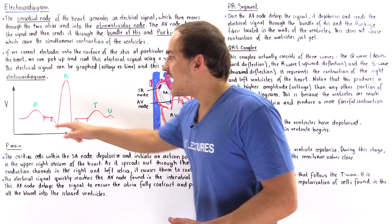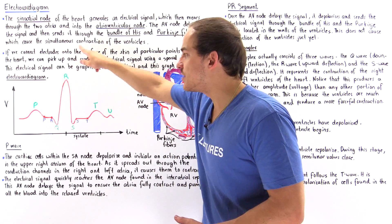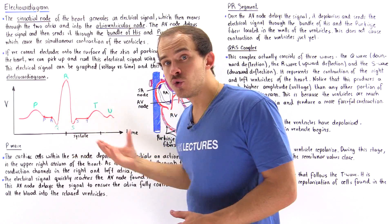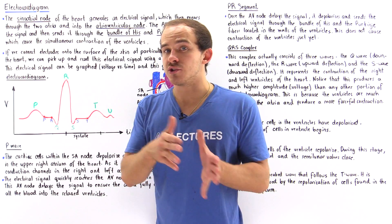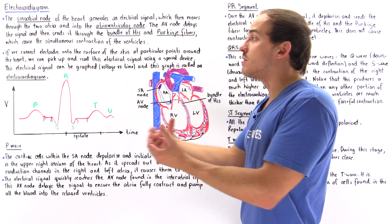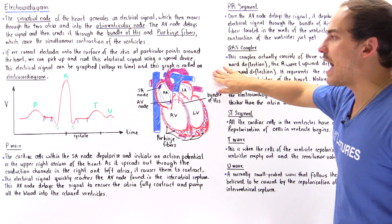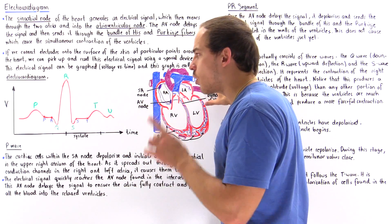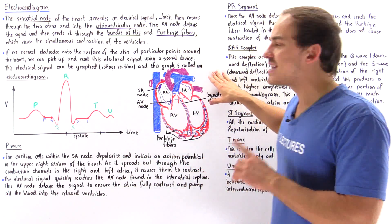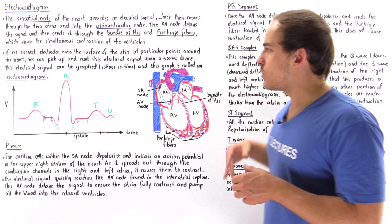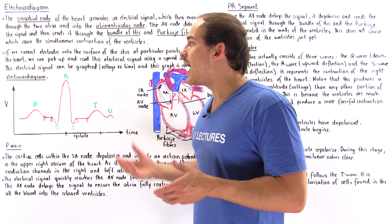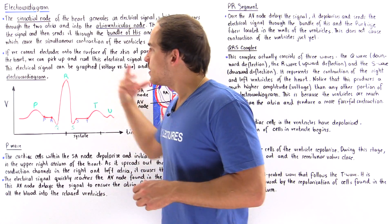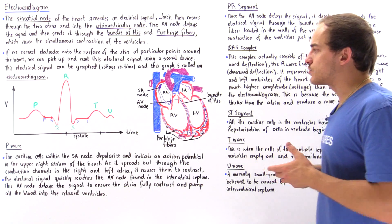The electrocardiogram shows the fluctuations — the change in voltage — produced by the heart. This voltage is used to generate the muscular contraction that propels blood through the blood vessels. In this lecture, we're going to study the normal electrocardiogram only, focusing on the brief details of a normal ECG without discussing abnormalities.